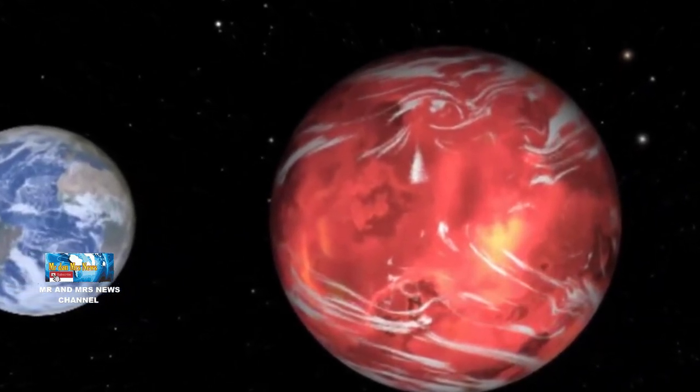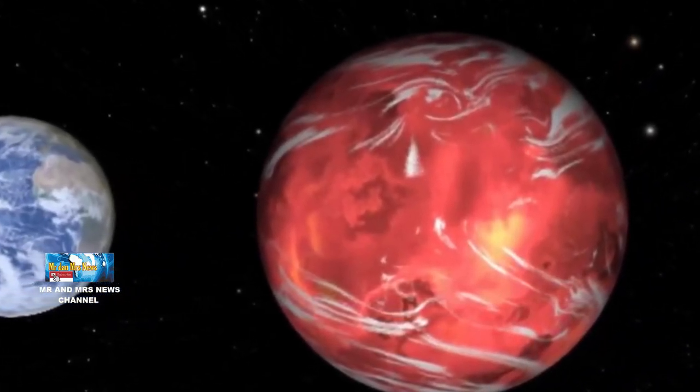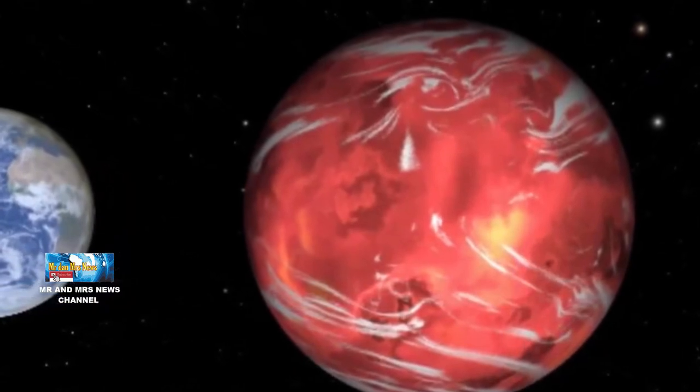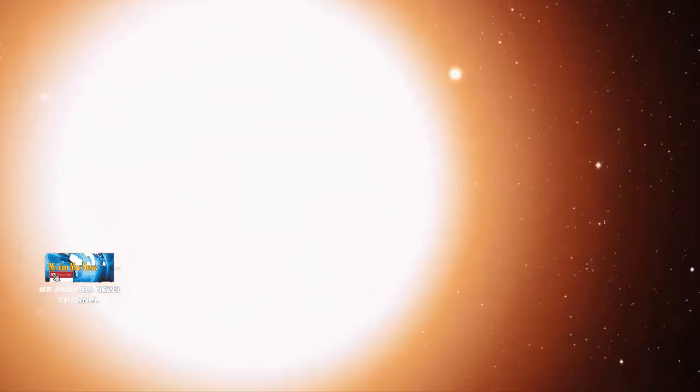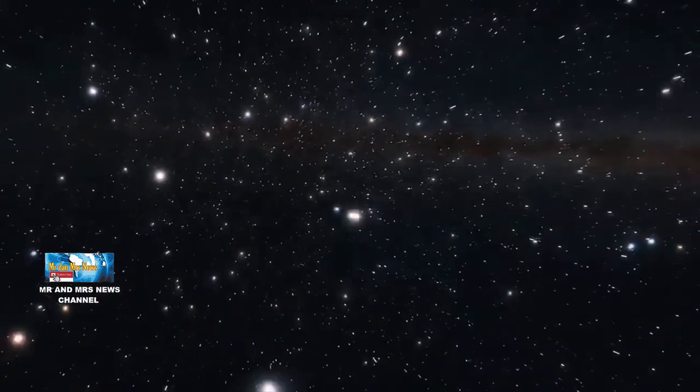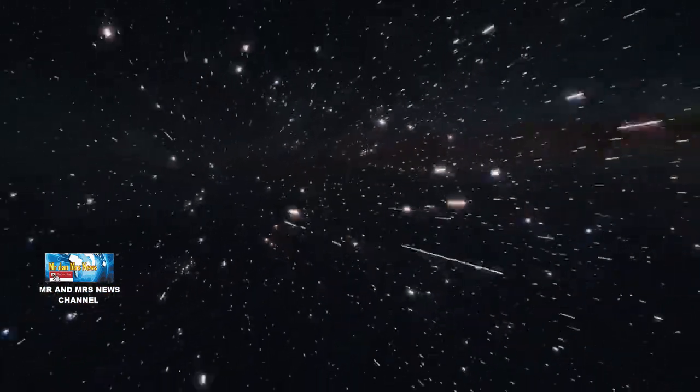Para peneliti melihat planet di dekat bintang redup menggunakan teleskop Subaru dari National Astronautical Observatory of Japan di Hawaii. Karena ukuran bintang lebih kecil dari matahari.